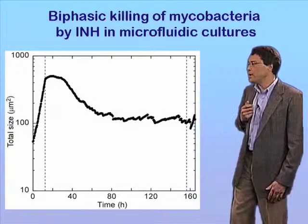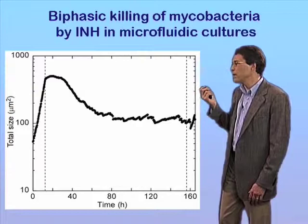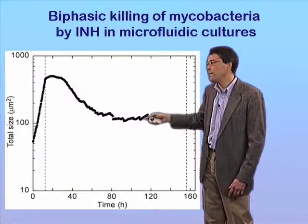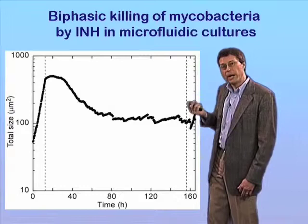When we grow bacteria in these microfluidic devices and expose them to a drug like isoniazid, the kill curve we see is clearly biphasic — there's a period of rapid killing followed by a period in which killing essentially stops. So the phenomenon we're trying to study, this biphasic killing response to isoniazid, can readily be studied at single-cell resolution using these microfluidic devices.